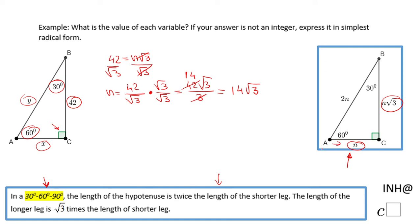But don't forget, this n is this x, so basically we have x = 14√3, and we finish with x.